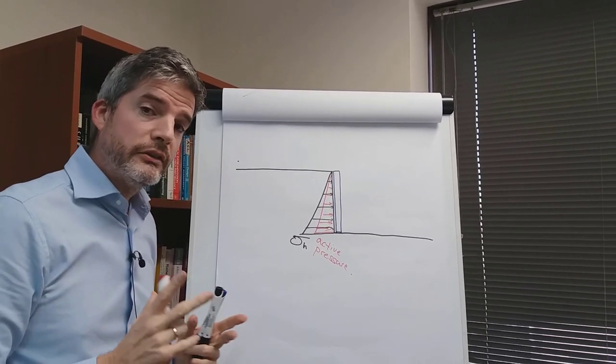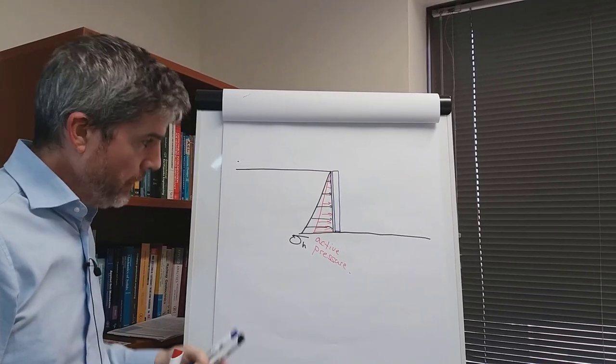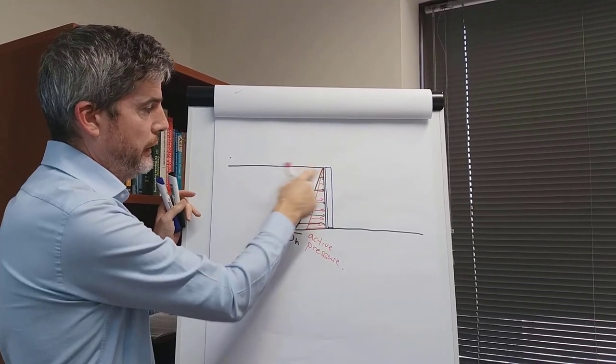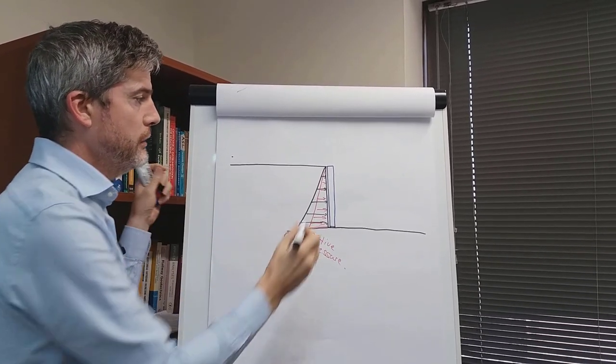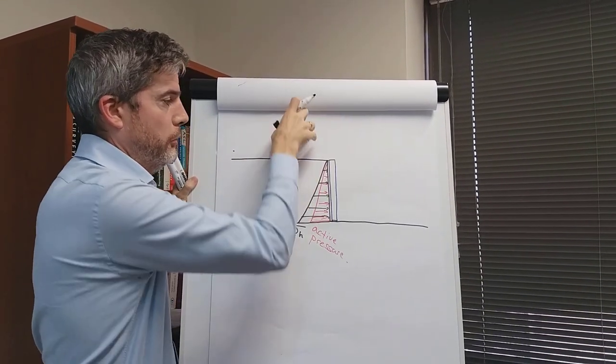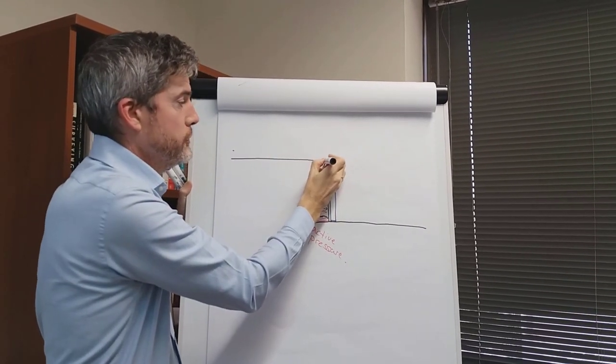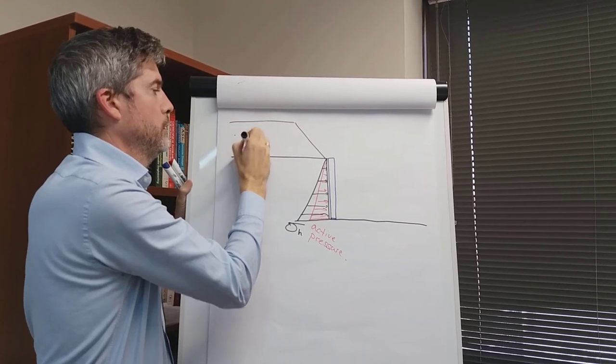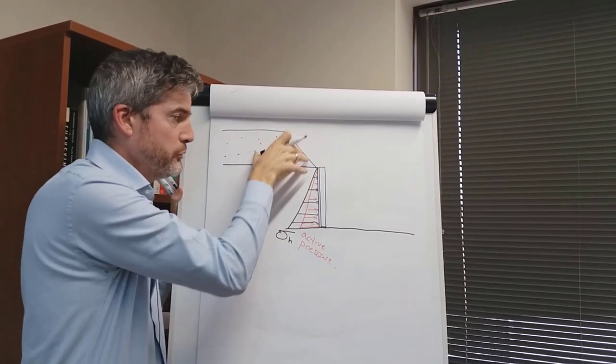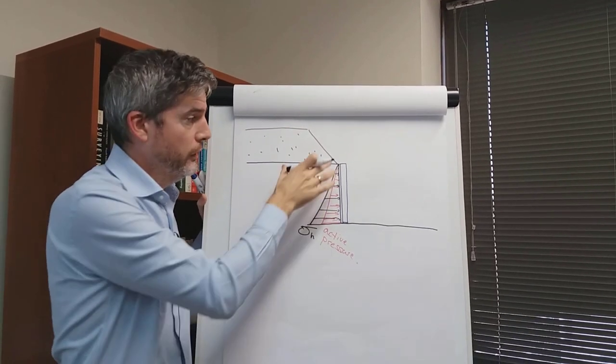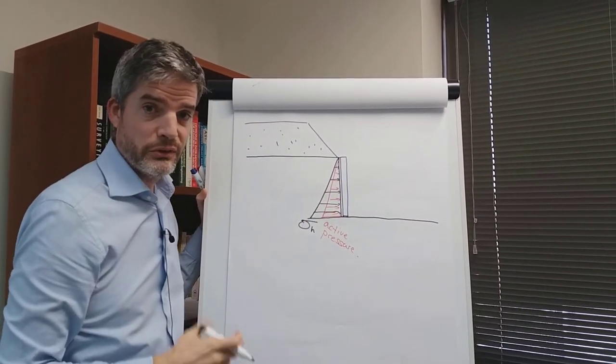What are some other things that we need to look out for during construction and in design? Well imagine you design the wall for this height here, but during construction or even in service somebody comes along and puts a big weight here, maybe a crane, or they may stockpile some material here. So imagine all that extra weight from stockpiling just behind this retaining wall.